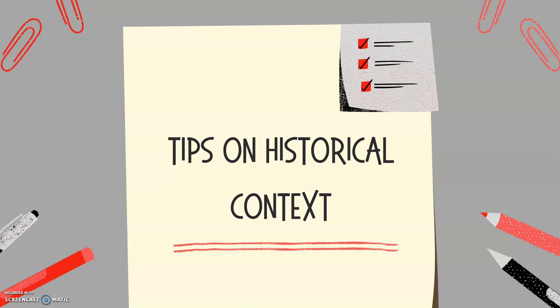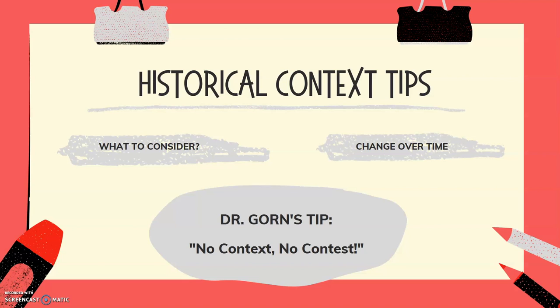Thinking about historical context and getting it into your NHD project can seem like a daunting task, so we've come up with a couple of tips to help you work that historical context into your NHD project. What should you consider? You're going to want to think about social, cultural, economic, religious, and political movements — what are those changes? So when talking about the temperance movement, we might have to look at the connections between temperance and abolition and suffrage. Those movements overlap, and the reason they're all happening at the same time is because it's the age of reform. We need to consider all of those different influences and how they play a role in our specific topic.